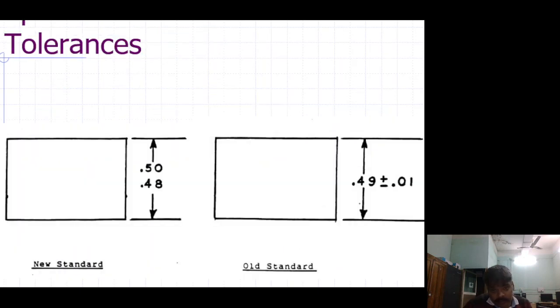Specification of linear tolerance. This is the new standard and this is the old standard. Here, minus 50, minus 48, plus minus 0.02. So here you put the upper limit and lower limit. Here you put the basic size and upper limit, plus minus 0.01. This is the old standard, this is the new standard for specification of linear tolerance.